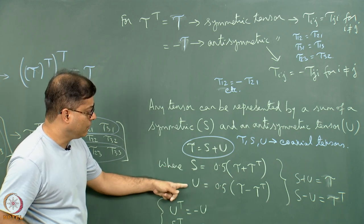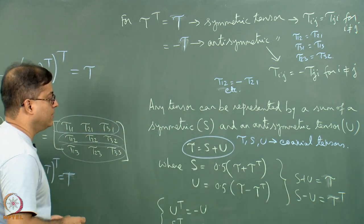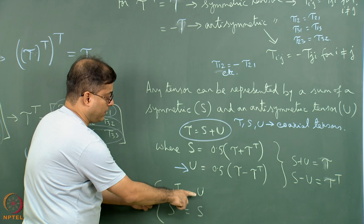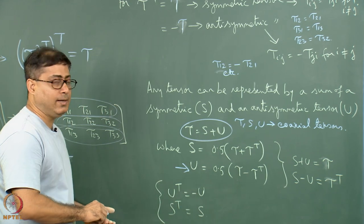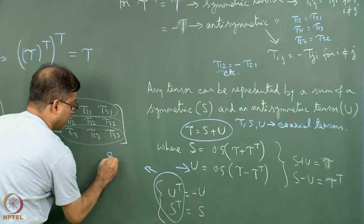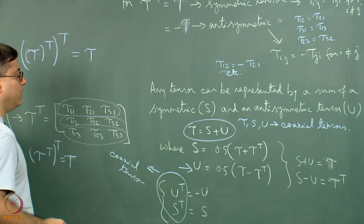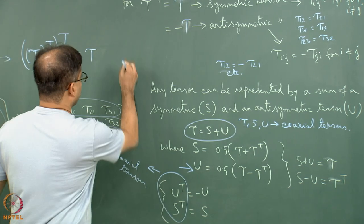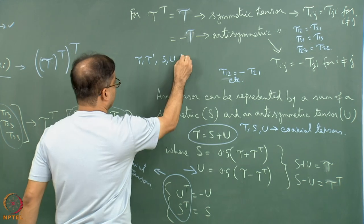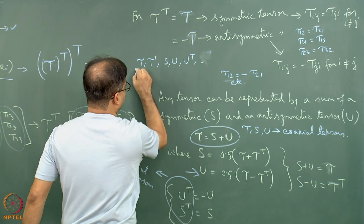We can also check that S minus U equals tau^T. Since U is anti-symmetric, U^T equals minus U by definition, and since S is symmetric, S^T equals S. Therefore U^T and S^T are also coaxial tensors. In summary, tau, tau^T, S, U, U^T, and S^T are all coaxial tensors.